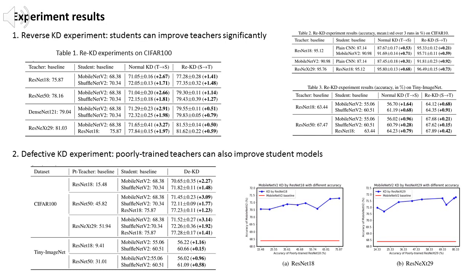As shown in the two figures, the red line is the baseline of student model, and the blue line means the accuracy after being taught by the teacher model. All the points of blue line are above the red line, which means all levels of teacher model can improve the student models.